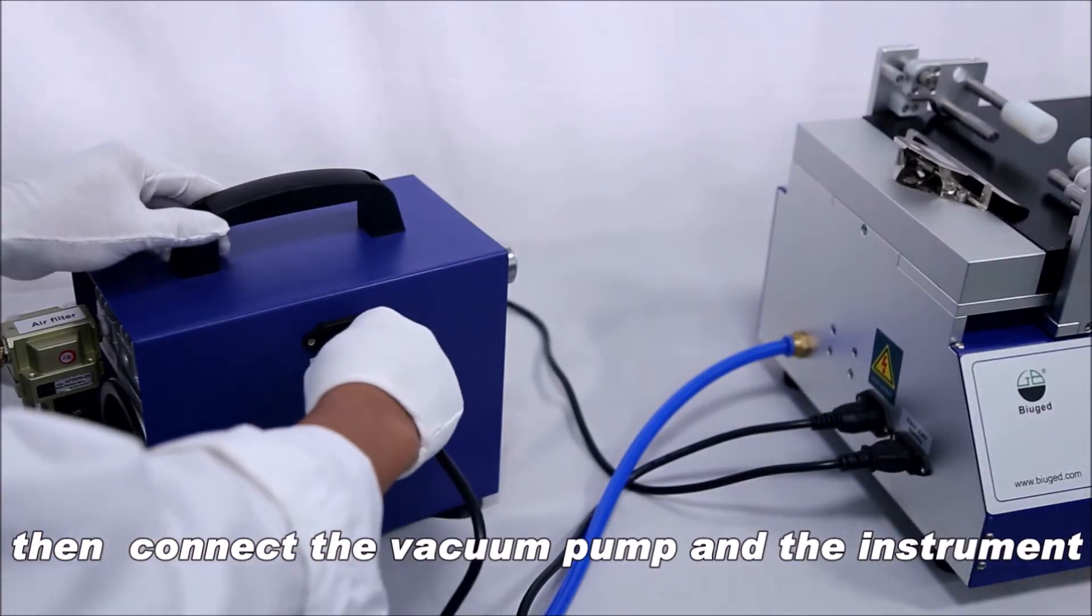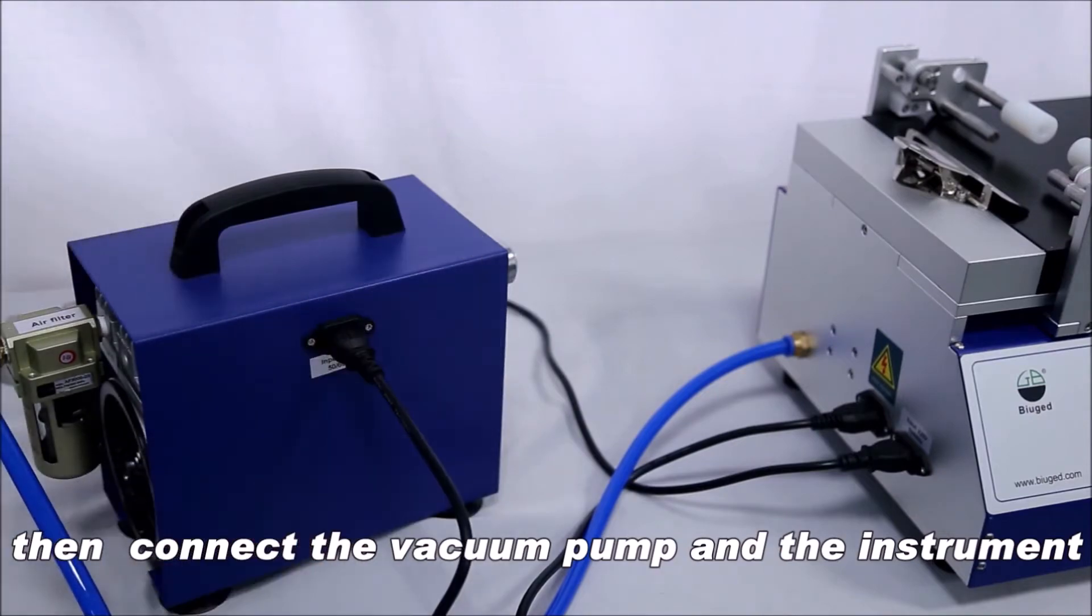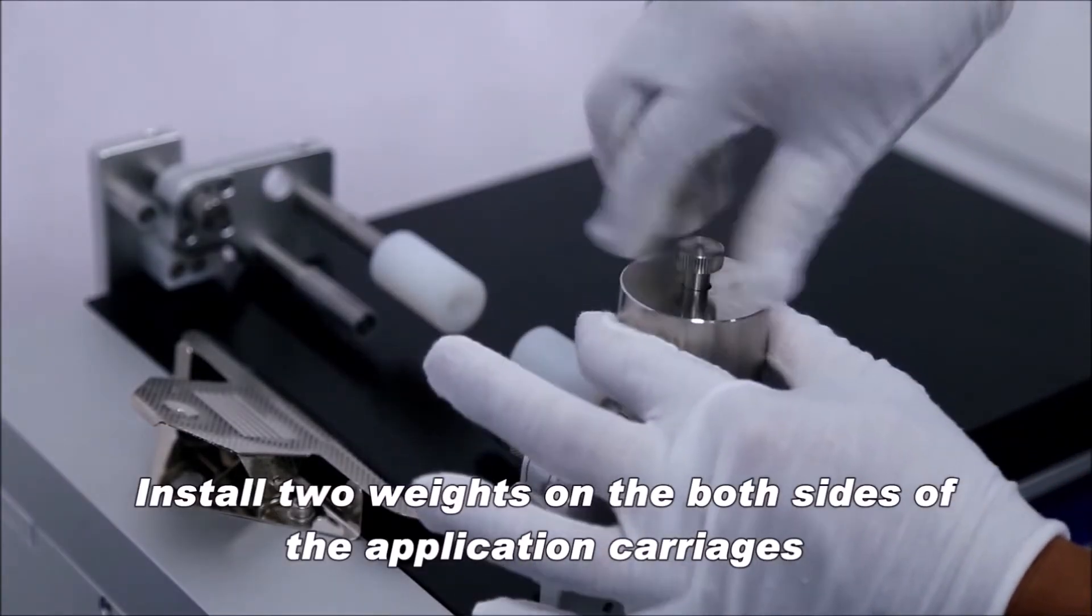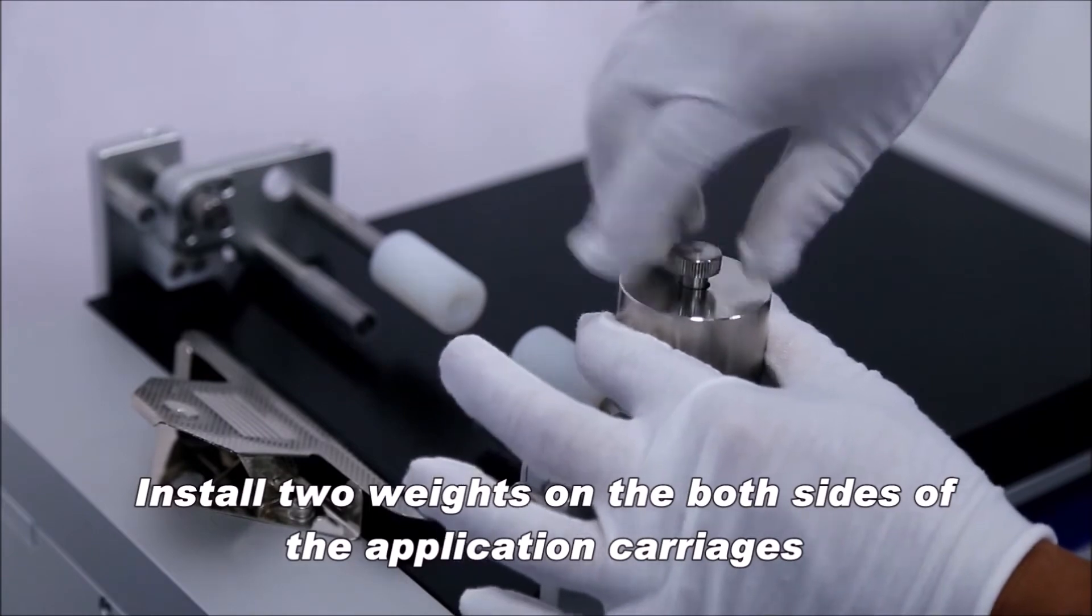Then connect the vacuum pipe and the instrument. Step 4: Install 2 weights on both sides of the application carriages.